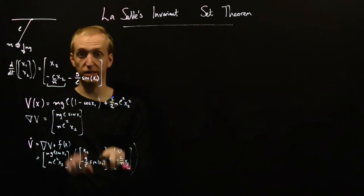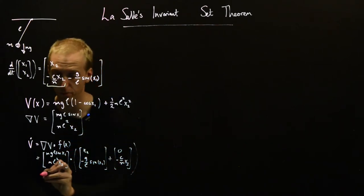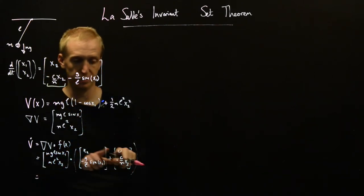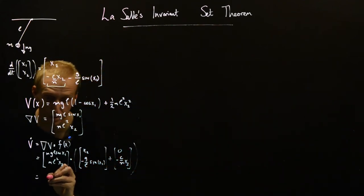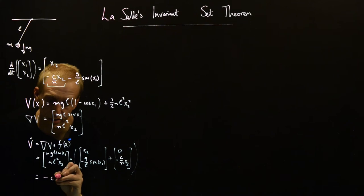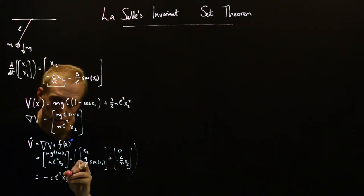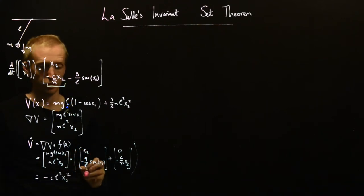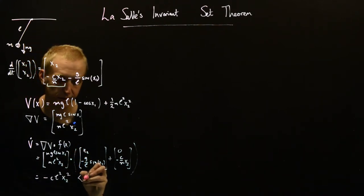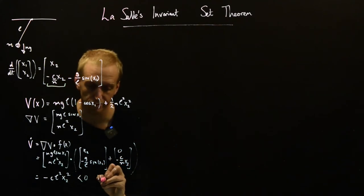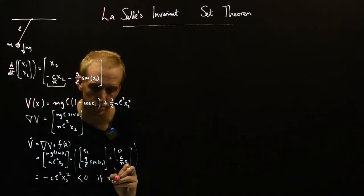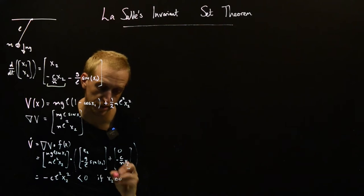So we know when we did the dot product with this, we got zero. So all we need to do is take the dot product of this, and we see that this is equal to minus C L squared x2 squared, which is less than zero.